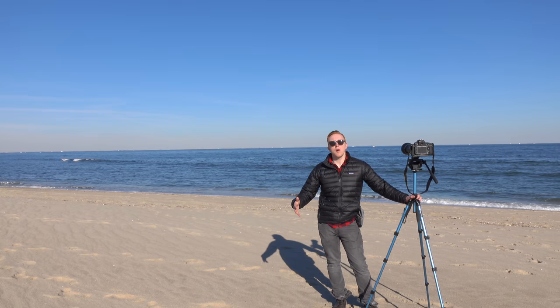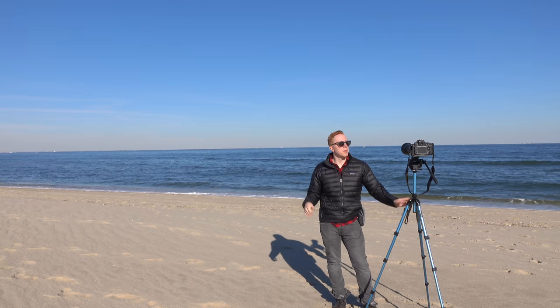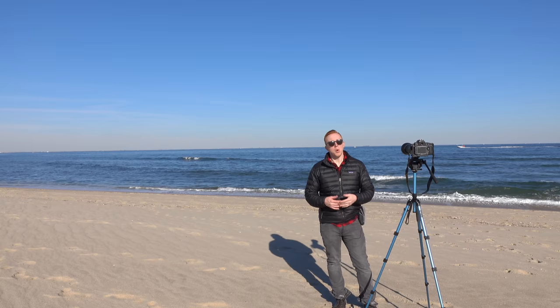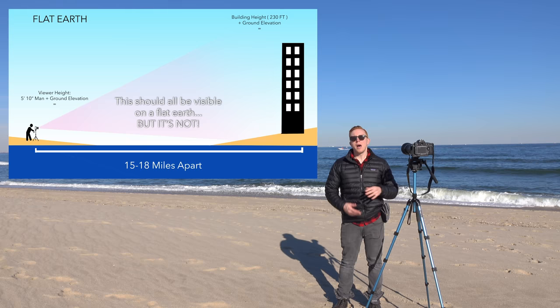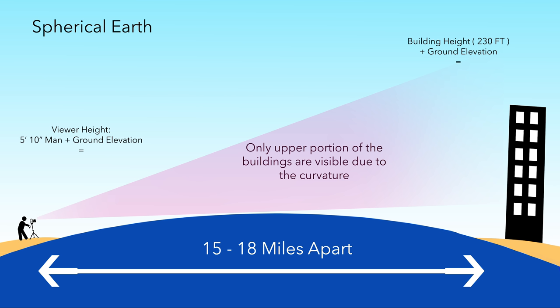Here we are at Sandy Hook, New Jersey — I'm at parking lot E — about 15 to 17 miles away from the apartment complex I was filming earlier this morning. I'm going to be using my Nikon D810, a 600 millimeter lens, and a 1.4 teleconverter to try to see across that body of water to the other side. If it's a flat earth, one would expect to see the same height that I am here — I'm about 10 feet above sea level because of the 5 feet of ground and about 5 feet of tripod height — meaning I should be able to see 10 feet above sea level on the other side, 17 miles away. These numbers are important because when we apply them to the curved earth formula, you'll realize what's happening with the fall-off and why I can only see two-thirds of the buildings.